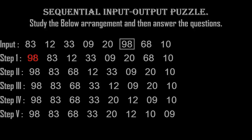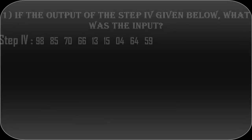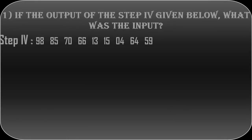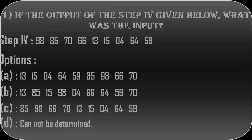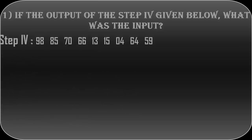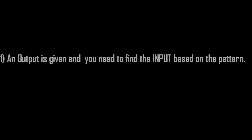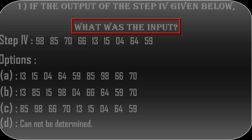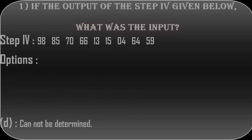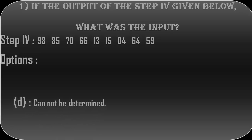Now we will try to resolve the questions being asked for this input. The first question is: if the output of step four is given, what was the input? Four options A, B, C, D are given. The question says: based on the input pattern, what would be the input? This is exactly type one. When this type of question asks what was the input and any middle step is given, you do not have to worry — just select 'cannot be determined.'